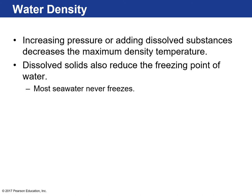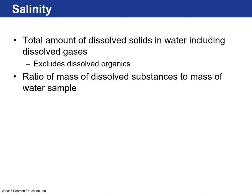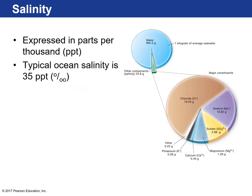Most seawater on Earth never really freezes because of the dissolved solids in it. These dissolved solids in ocean water are referred to as salinity — the total amount of dissolved solids. The ratio of the mass of dissolved substances to the mass of a water sample is the salinity, typically expressed in parts per thousand (PPT). The average ocean salinity is about 35 parts per thousand — meaning in a kilogram (1000 grams) of seawater, approximately 35 grams are dissolved solids.